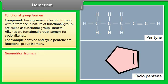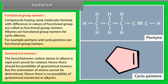Geometrical isomers: the bond between carbon atoms in alkynes is rigid and cannot be rotated. Hence, there should be the possibility of geometrical isomers. But the orientation of atoms cannot be determined. Hence, there is no possibility of geometrical isomerism in alkynes.